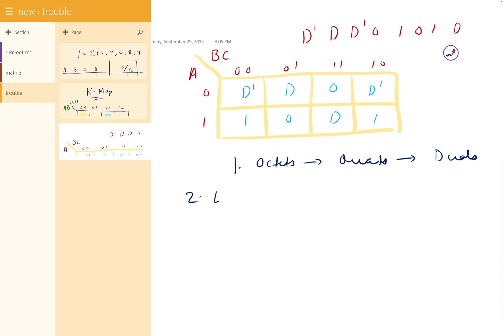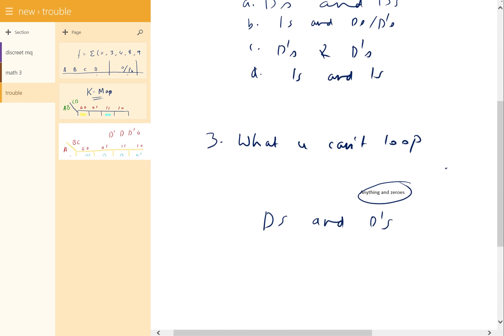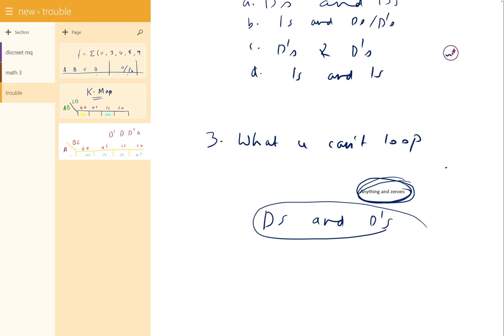Second rule is, what can you loop? You can loop Ds and Ds, you can loop 1s and Ds or D', you can loop D' and D', you can also loop 1s and 1s. Third rule is what you can't loop. You cannot loop 0s with anything. You can also not loop Ds and D'. You cannot loop these two things.